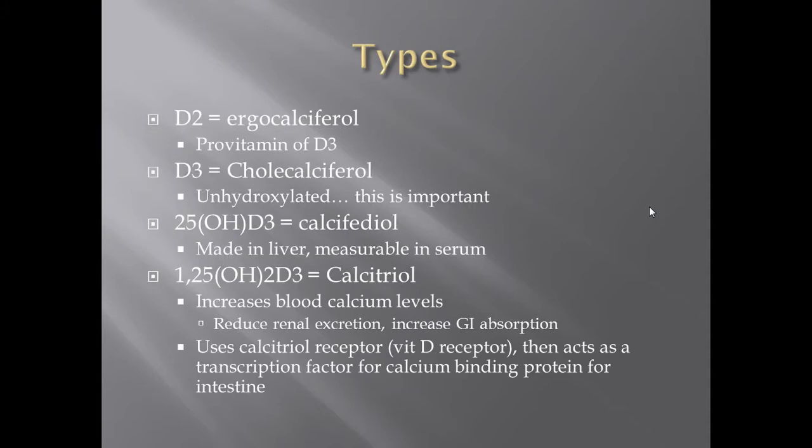There are a few different types of vitamin D. A provitamin form of vitamin D would be D2, and D2 can be converted into D3, and D3 is going to be the important one. It's unhydroxylated at this point. When our body makes it in the skin, we have an unhydroxylated — so no OH group — attached to this D3 molecule.